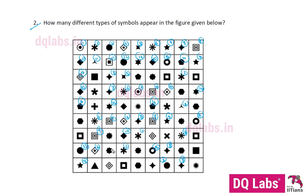Seventeen, seventeen, seventeen: eighteen. Eighteen, eighteen. Seventeen, seventeen — this was sixteen, so this is eighteen, this is nineteen. Seventeen was this — this is nineteen. Nineteen, nineteen, nineteen, nineteen, nineteen.